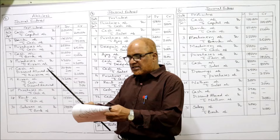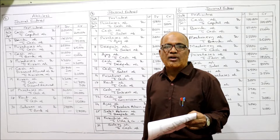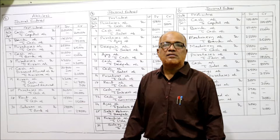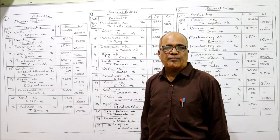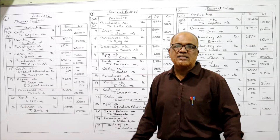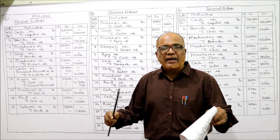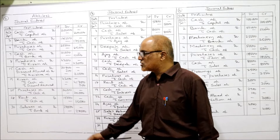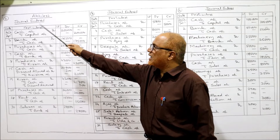Next, 25th: bought goods for cash — purchases account debit to cash, being the goods purchased for cash. Next, 28th: paid rent — rent is an expense, all expenses will be debited, rent account debit to cash, being the rent paid. Last one: paid salaries by check — salary is an expense, salary account debit to bank since we are issuing a check. Being the salaries paid through check. That completes the second problem.